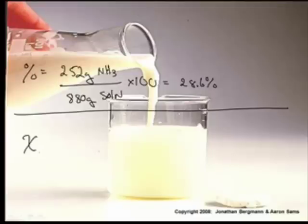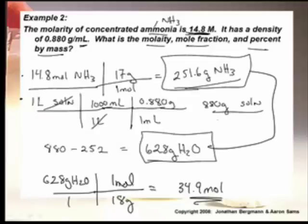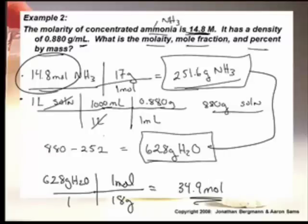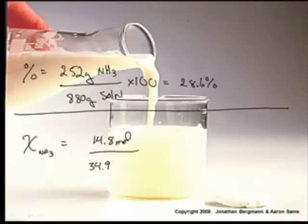To do the mole fraction of the ammonia, that would be the moles over the total moles. Now we had the moles calculated. Actually, it was just given. 14.8. So that'll be 14.8 moles over the total moles, which will be 34.9. So that'll be 34.9 plus 14.8. Put that in parentheses. There are no units on that. And when you get that, you get 0.30. So we've done two out of the three. That's the mole fraction of the ammonia. Then one minus that would be the mole fraction of the water.